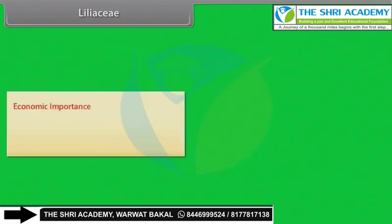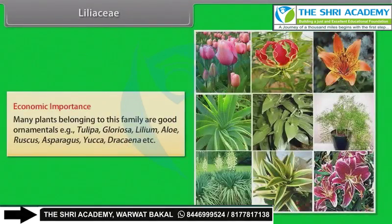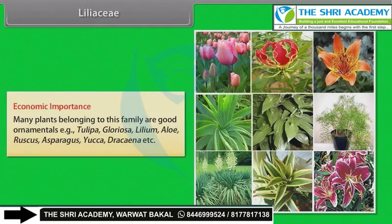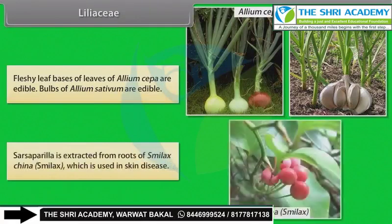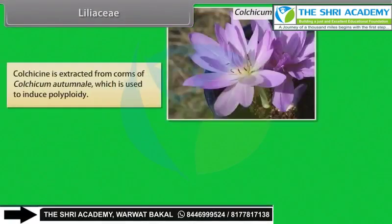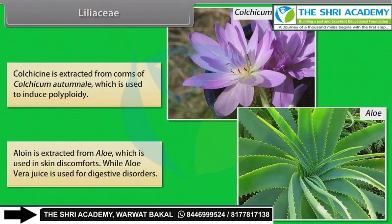Economic Importance: Many plants belonging to this family are good ornamentals, for example Tulipa, Gloriosa, Lilium, Aloe, Ruscus, Asparagus, Yucca, Dracaena, etc. Fleshy leaf bases and leaves of Allium cepa are edible; bulbs of Allium sativum (garlic) are edible. Sarsaparilla is extracted from roots of Smilax china, used in skin disease. Colchicine is extracted from corms of Colchicum autumnale, used to induce polyploidy. Aloin is extracted from Aloe, used in skin discomfort, while Aloe vera juice is used for digestive disorders.